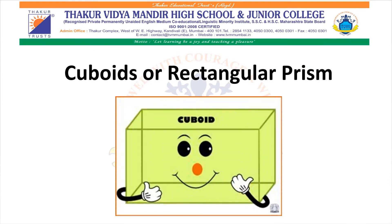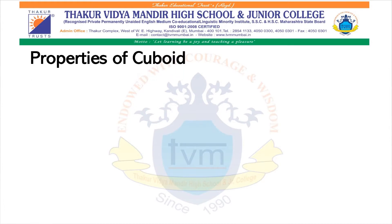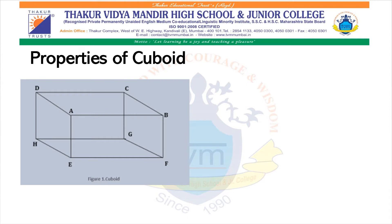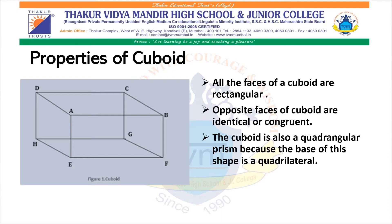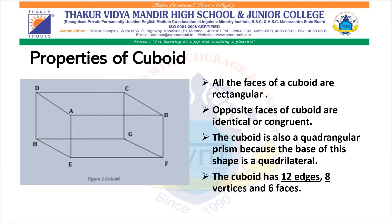First, Cuboids, also called Rectangular Prism. Properties of Cuboid: All the faces of a cuboid are rectangular. Opposite faces of a cuboid are identical or congruent. The cuboid is also a quadrangular prism because the base of this shape is a quadrilateral. The cuboid has 12 edges, 8 vertices and 6 faces.